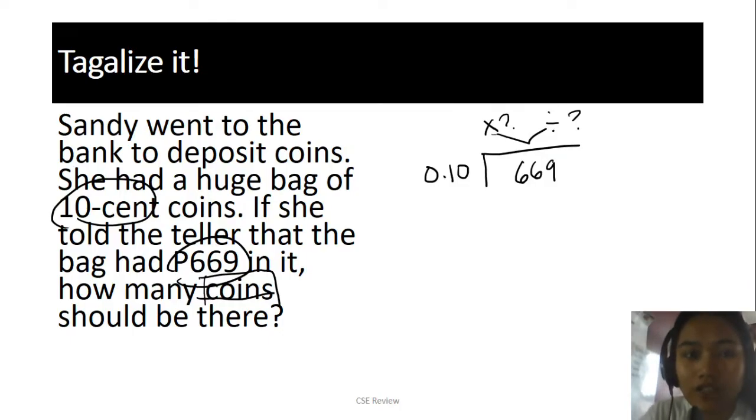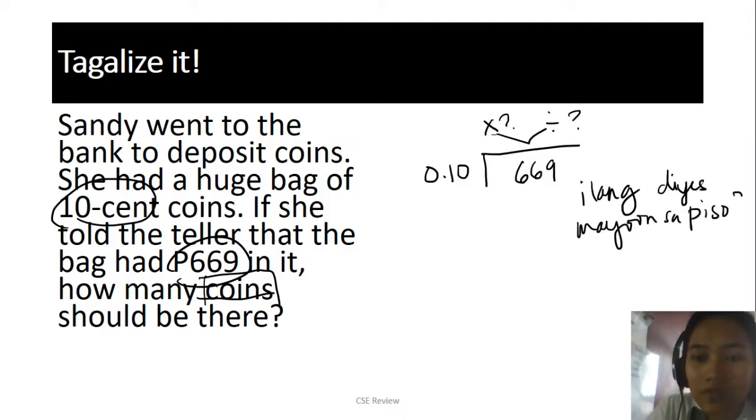Let me offer this alternative. Sandy went to the bank to deposit coins. She has 10-cent coins, right? Ten-cent centimos. She has 669 pesos. What do you need to do? Find out how many 10-cent coins she has. Now, the question would be this: How many 10-cent coins are there in one peso? Now, how many 10-cent coins are in one peso? You automatically know it's 10, right? Because 10 cents means 10 coins per peso.